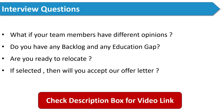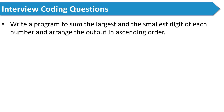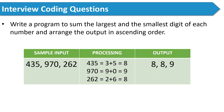In her interview, the interviewer gave a coding problem: write a program to sum the largest and smallest digit of each number and arrange the output in ascending order. For example, given three numbers, in 435 the smallest digit is 3 and the largest is 5, so their sum is 8. Perform this for each number, then arrange all results in ascending order. This coding question was pretty easy.